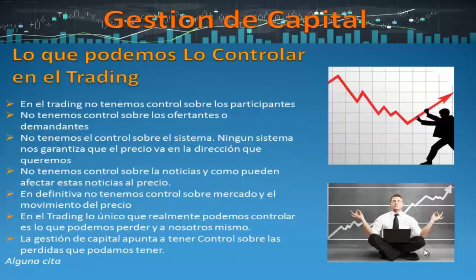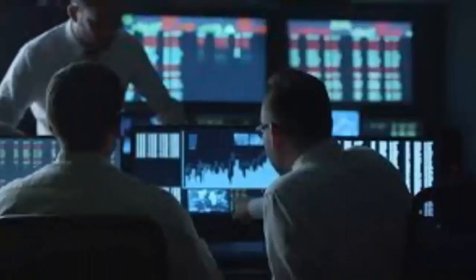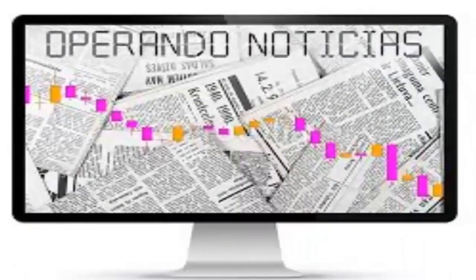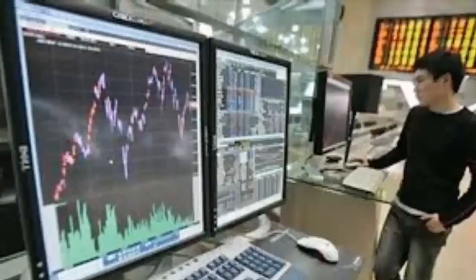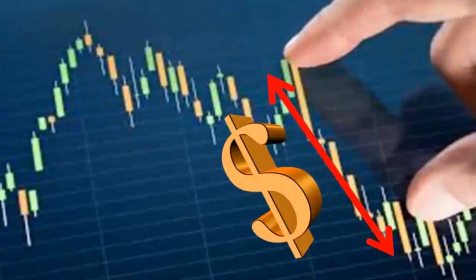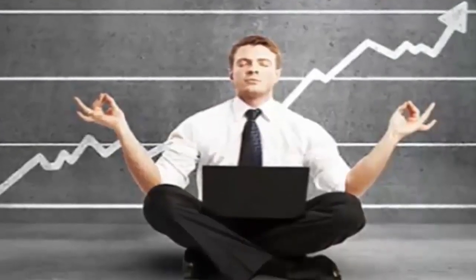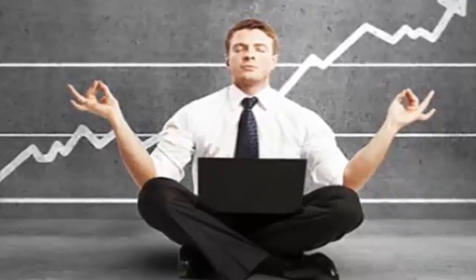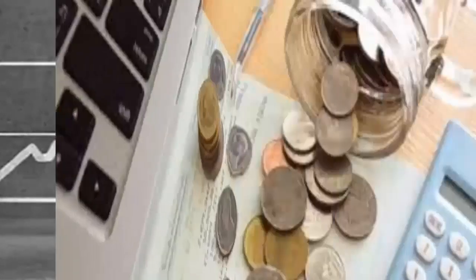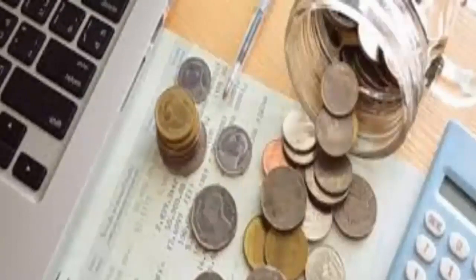¿Qué es lo que podemos controlar en el trading? En el trading no podemos controlar a los participantes, no tenemos control sobre los ofertantes o los demandantes, no tenemos control sobre el sistema. Ningún sistema nos garantiza que el precio va a ir en la dirección que queremos. No tenemos control sobre las noticias ni sobre el mercado y el movimiento del precio. En el trading, lo único que realmente podemos controlar es lo que podemos perder y también a nosotros mismos. La gestión de capital apunta a tener el control sobre las pérdidas que podemos tener.